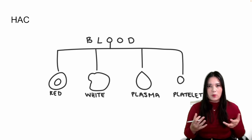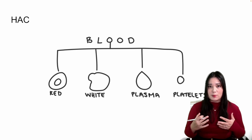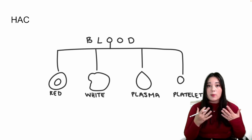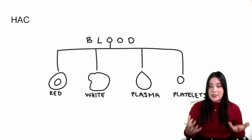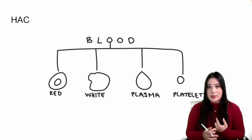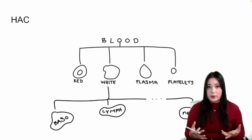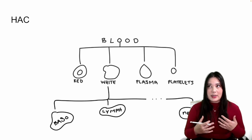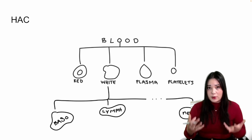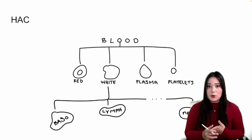What does that look like? A really good example is blood cells. Blood is made up of different groups of cells, like red blood cells, white blood cells, plasma, and platelets. But when we look at any of those groups, like white blood cells, we can see that it is made up of other groups of cells — for instance, basophils, lymphocytes, and neutrophils.